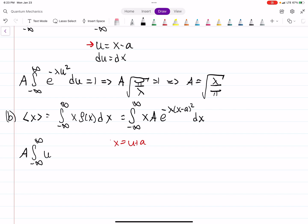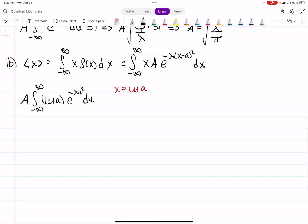So you have U plus A, and then you still have E to the minus lambda U squared DU. None of that changes. So from here, I guess I'll do maybe one last little step.